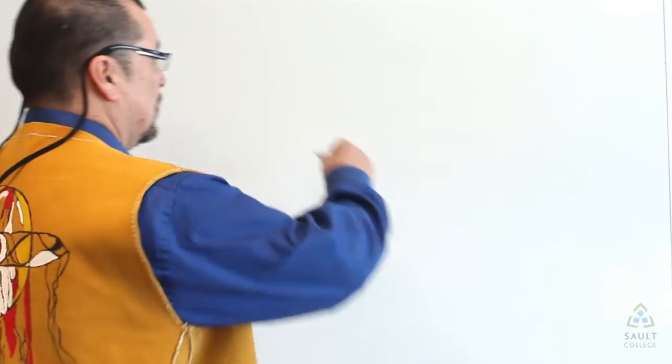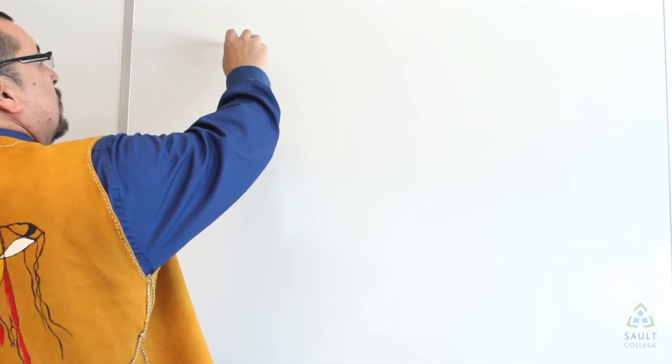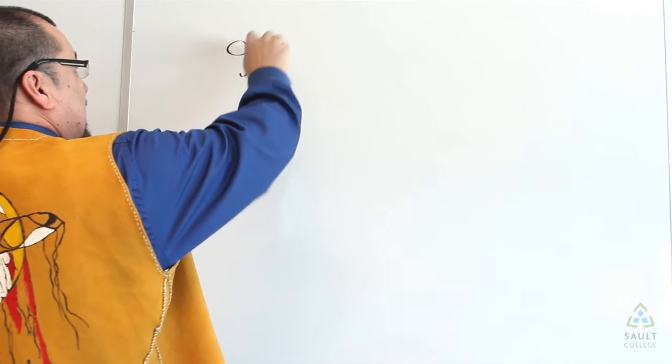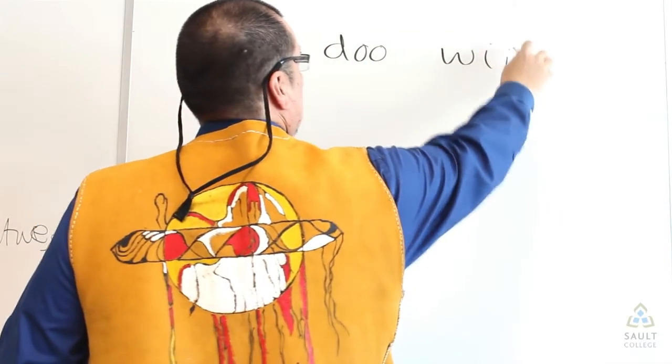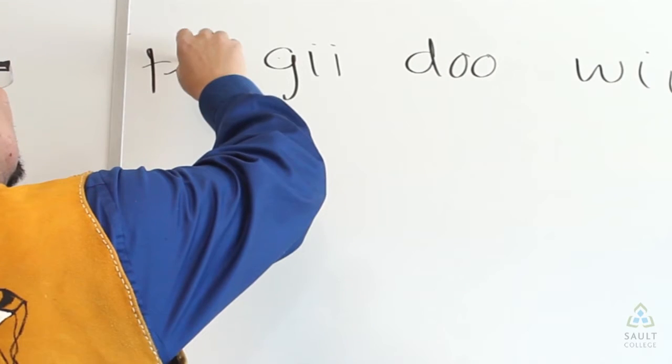In order to make a sentence using those conjunctions, joining those two words together, like I said, you have gi, doo, wi. These are your tense structures.